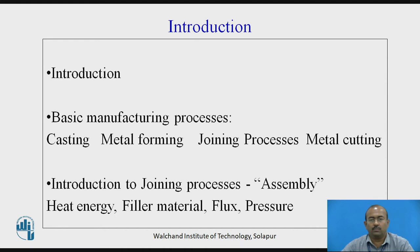To form an assembly of more than two elements together in a permanent manner, we have to go with the joining process. For joining processes, including welding, we follow four parameters: heat energy, filler material, flux material, or pressure. More than two or all four parameters can be used to fulfill the joining process operation.